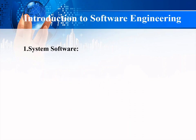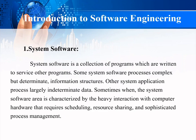First is system software. System software is a collection of programs whose main purpose is to provide services to other programs. Some system software processes complex but determinate information structures. The system software area is characterized by heavy interaction with computer hardware, requiring scheduling, resource sharing, and sophisticated process management.